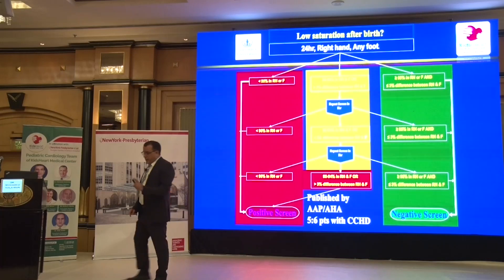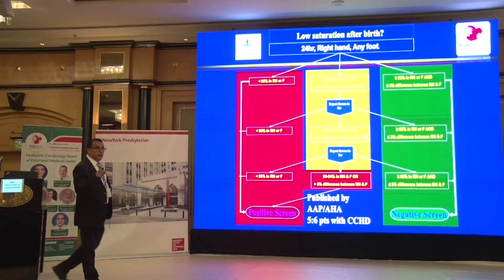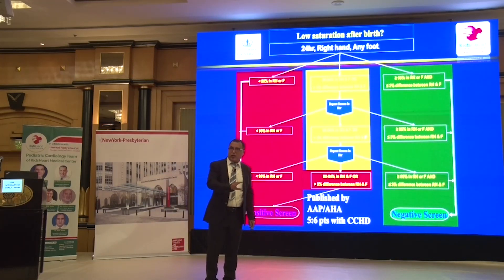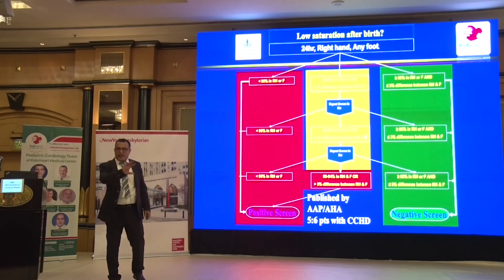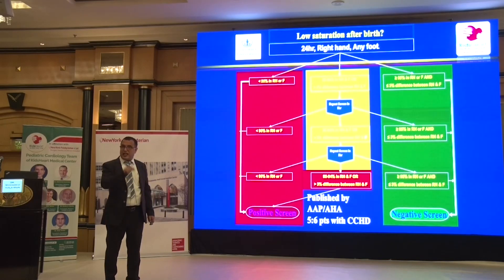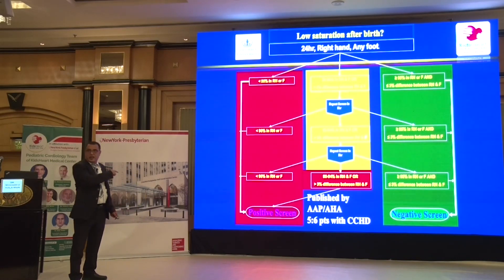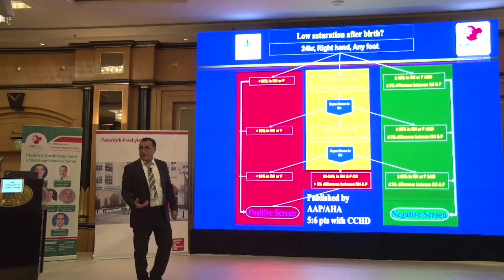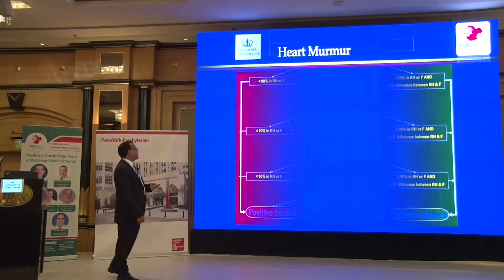This saturation screening has saved more than one-third of congenital heart disease deaths in the United States that went undiagnosed previously. Theoretically, if done correctly, it can diagnose up to five out of every six patients with critical congenital heart disease — specifically ductal-dependent lesions or pathway obstructions, not VSD, PDA, or ASD. What it can't detect still depends on your physical exam and good observation.